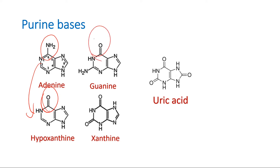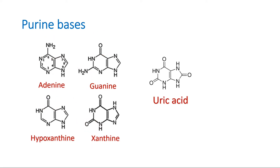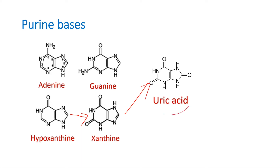In the same way, deamination of guanine will produce xanthine. You can also think of it this way: oxidation of hypoxanthine will also produce xanthine. Xanthine is 2,6-dioxopurine. Oxidation of xanthine produces uric acid, which is 2,6,8-trioxopurine.